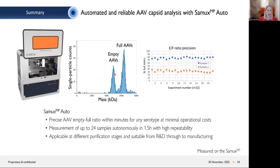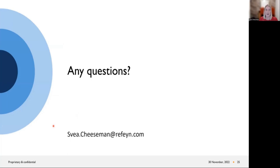In summary, the SAMXMP Auto delivers precise AAV empty/full ratios within minutes for any serotype at minimal operational costs. It can measure up to 24 samples autonomously in approximately one and a half hours with high repeatability. The SAMXMP Auto can be applied at different purification stages and is suitable from R&D all the way through to manufacturing. Thank you for your attention. I'm happy to receive your questions — please write to svea.cheesman@refine.com.